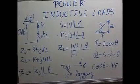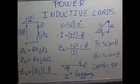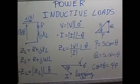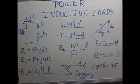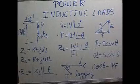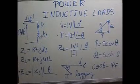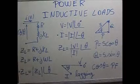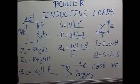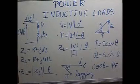Then we say that when we have an inductive load, the current is lagging the voltage. Because the angle of the current is negative, it is behind the voltage. If we have a capacitive load, the current is leading the voltage. Because the angle of the current is positive, it is in front of the voltage.